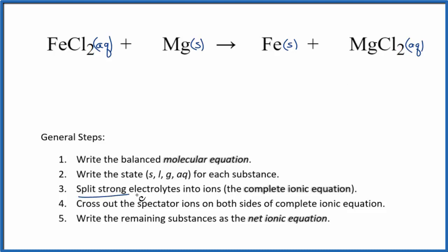Now we can split the strong electrolytes into their ions, and this will give us the complete ionic equation. For iron 2 chloride, we don't know the charge on iron, but we do know that chlorine forms ions with a 1 minus charge. Since we have two of them, 2 times 1 minus, this has to be 2 plus.